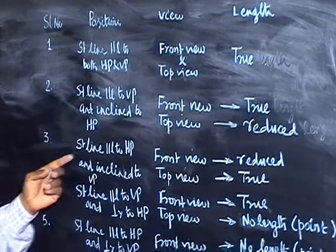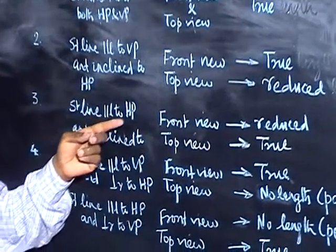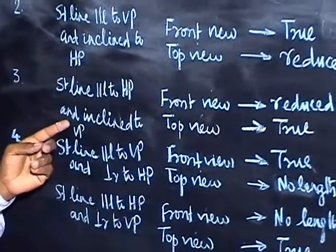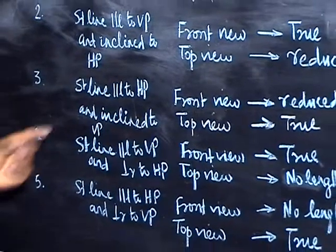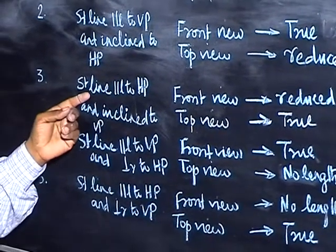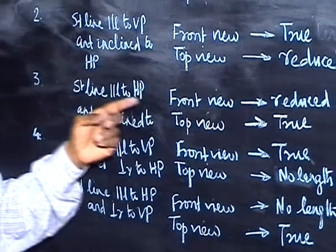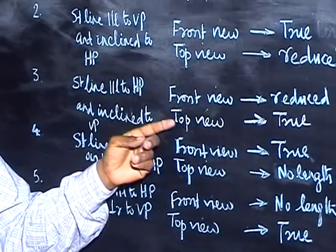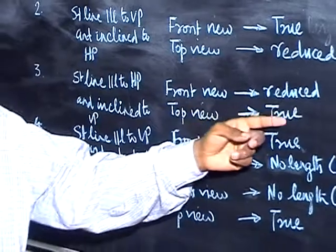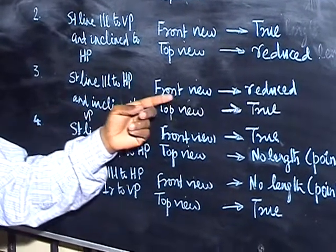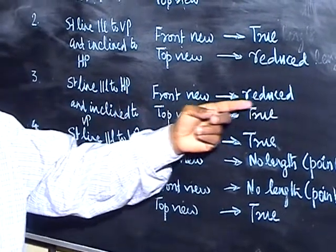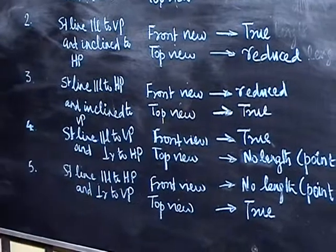The third position: the straight line is parallel to HP and inclined to VP. Since it is parallel to HP, the top view gives the true length. Since it is inclined to VP, in the front view you will get a reduced length.